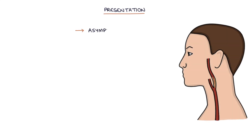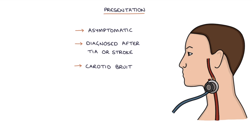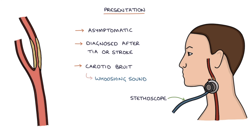Carotid artery stenosis is usually asymptomatic with no symptoms, and is usually diagnosed after a transient ischemic attack or a stroke. A carotid bruit may be heard on examination. This is a whooshing sound heard with a stethoscope over the affected carotid artery, caused by turbulent flow around the stenotic area during systole, during contraction of the heart.